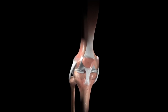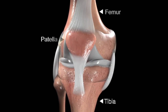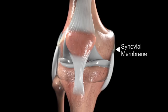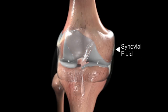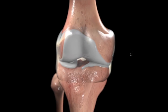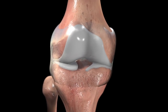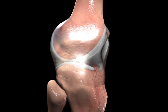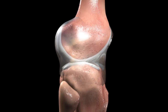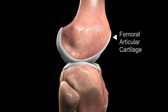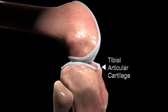The knee joint is made up of the femur, tibia, patella, along with the synovial membrane, which contains synovial fluid. Synovial fluid acts as a lubricant in the knee joint. The end of the femur is covered in articular cartilage, which moves against the articular cartilage of the tibia.